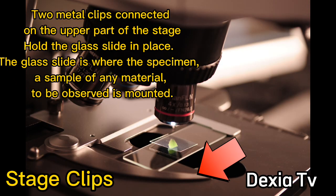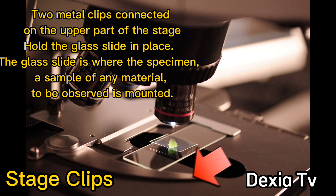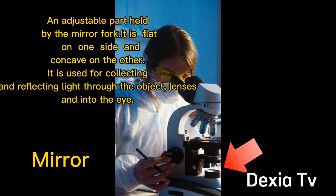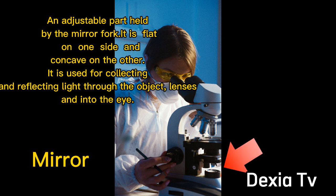Stage clips: Two metal clips connected to the upper part of the stage. Mirror: An adjustable part held by the mirror fork. It is flat on one side and concave on the other.